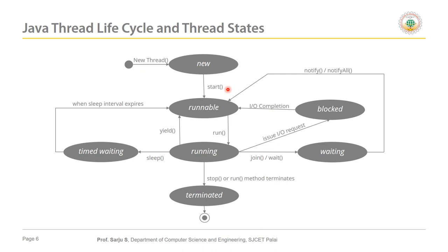In most operating systems, each thread is given a small processing time called a quantum or time slice within which it performs execution. A thread utilizing its quantum is said to be in the running state. When the quantum expires, the thread returns to the runnable state and the OS assigns another thread to the processor. The process the OS uses to determine which thread to dispatch is called thread scheduling, and it is dependent on thread priorities.